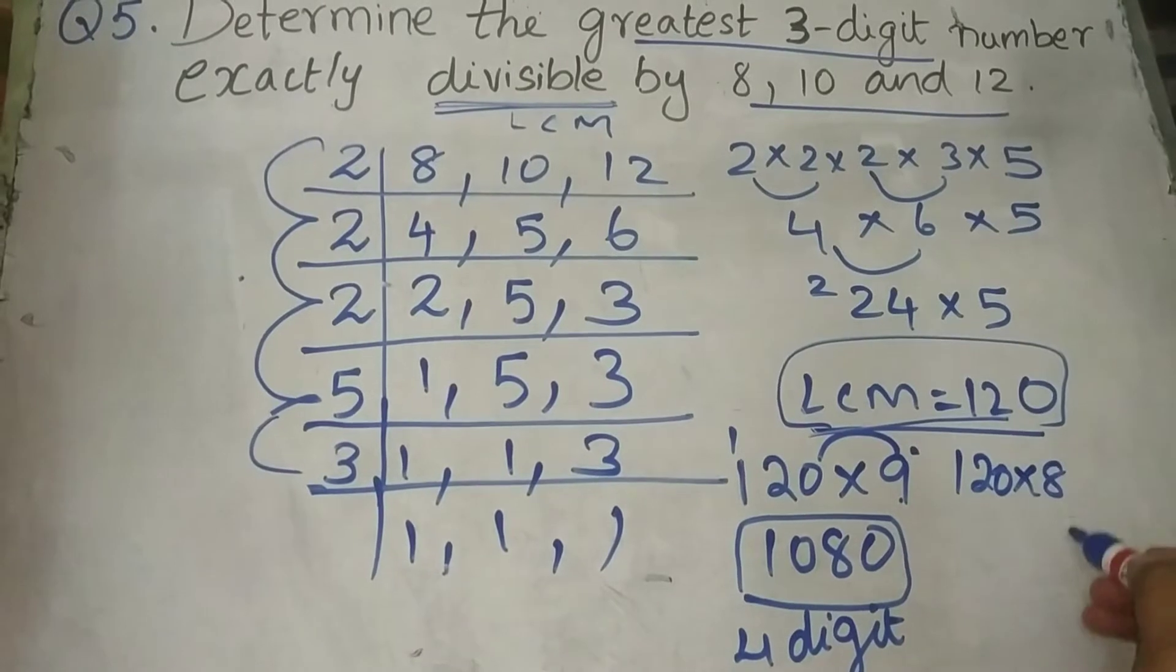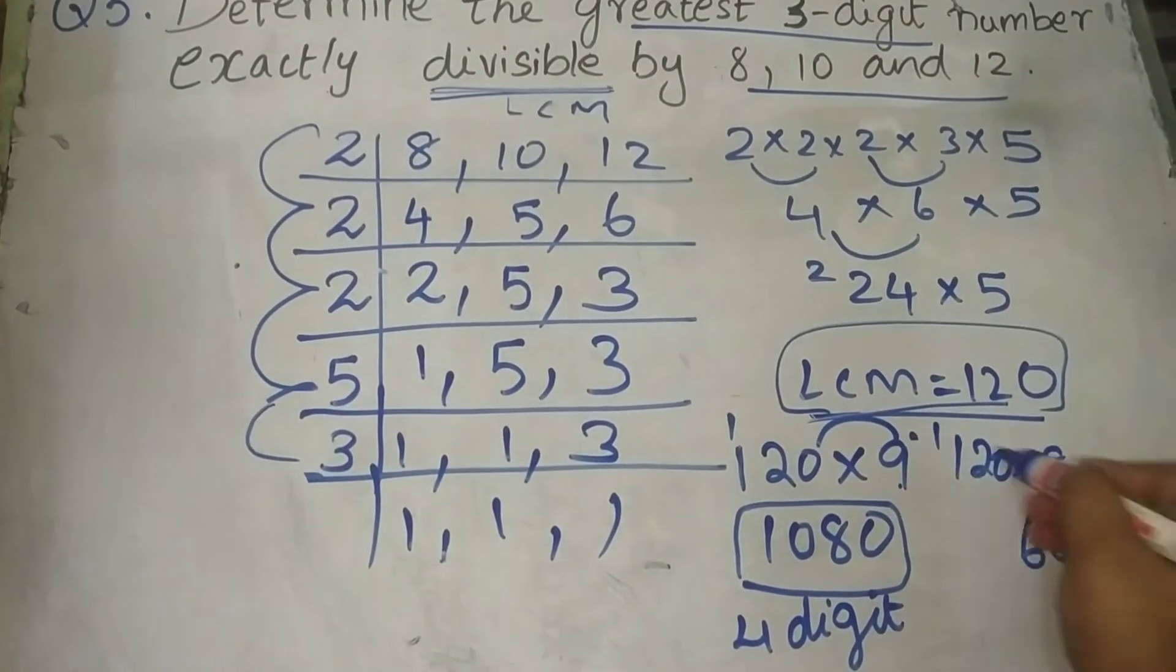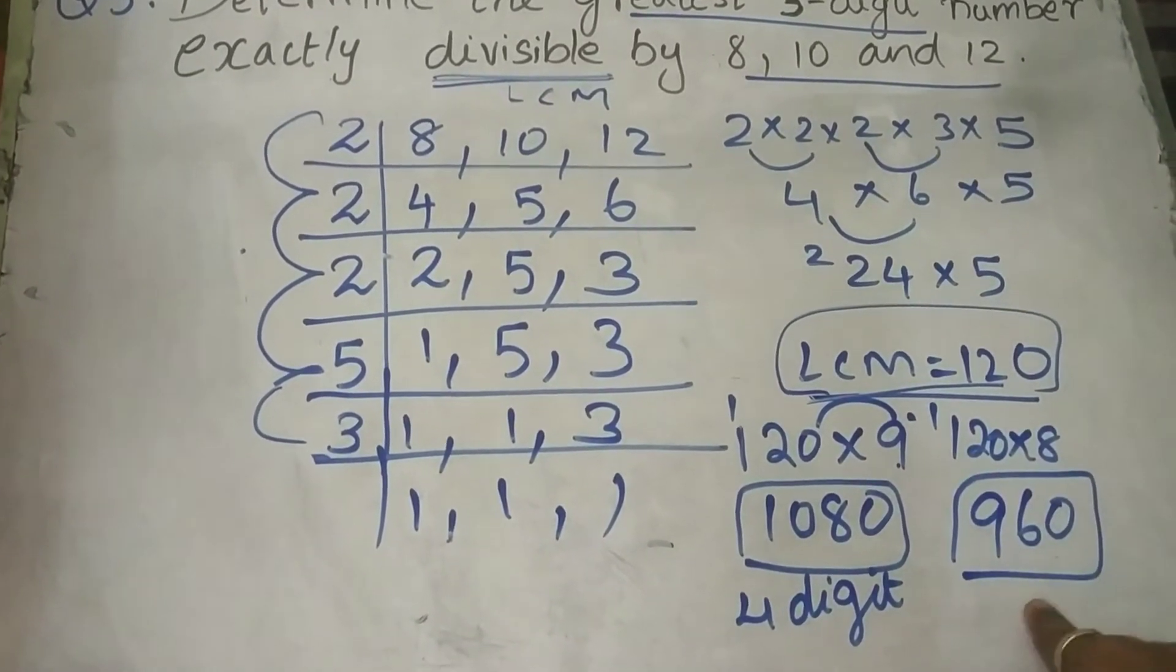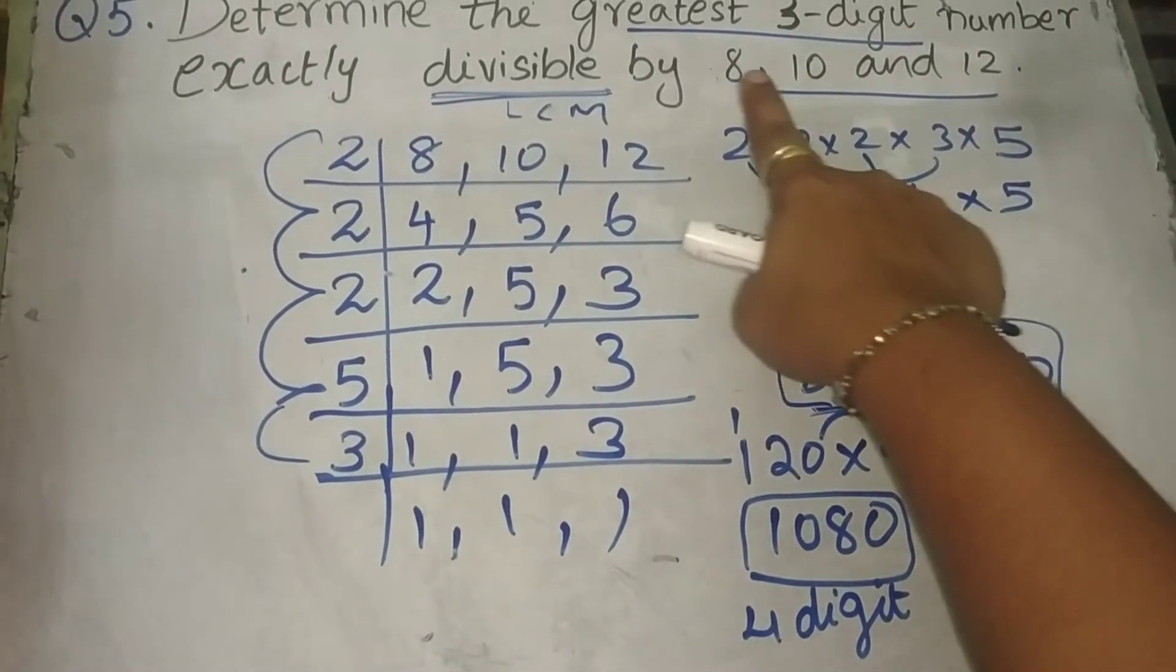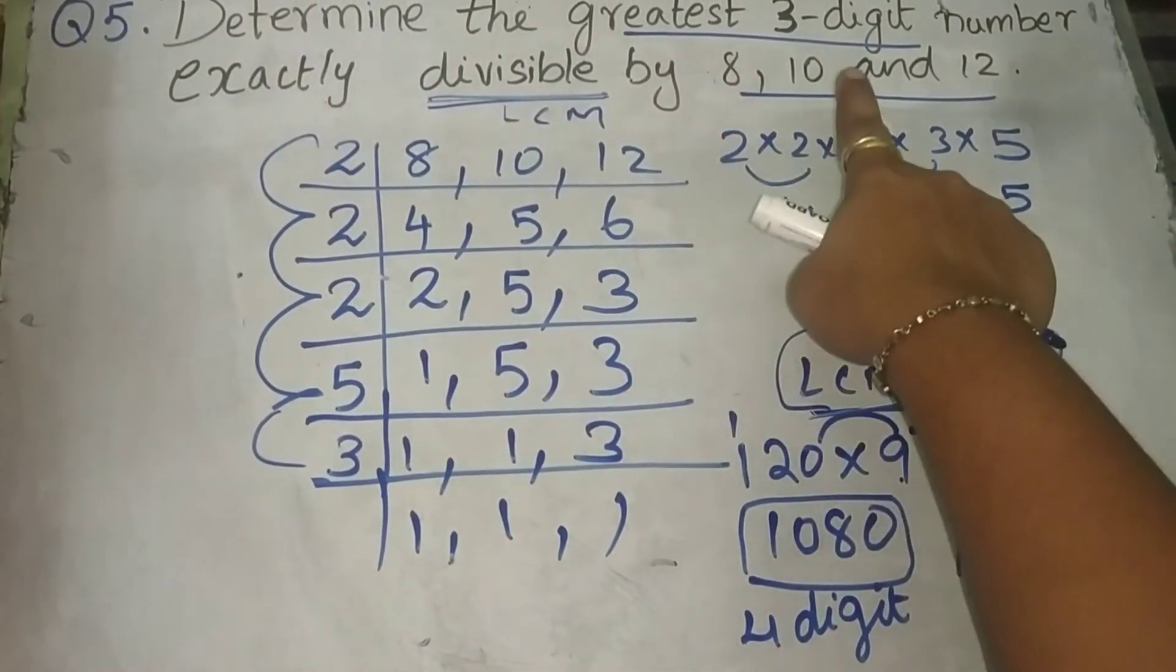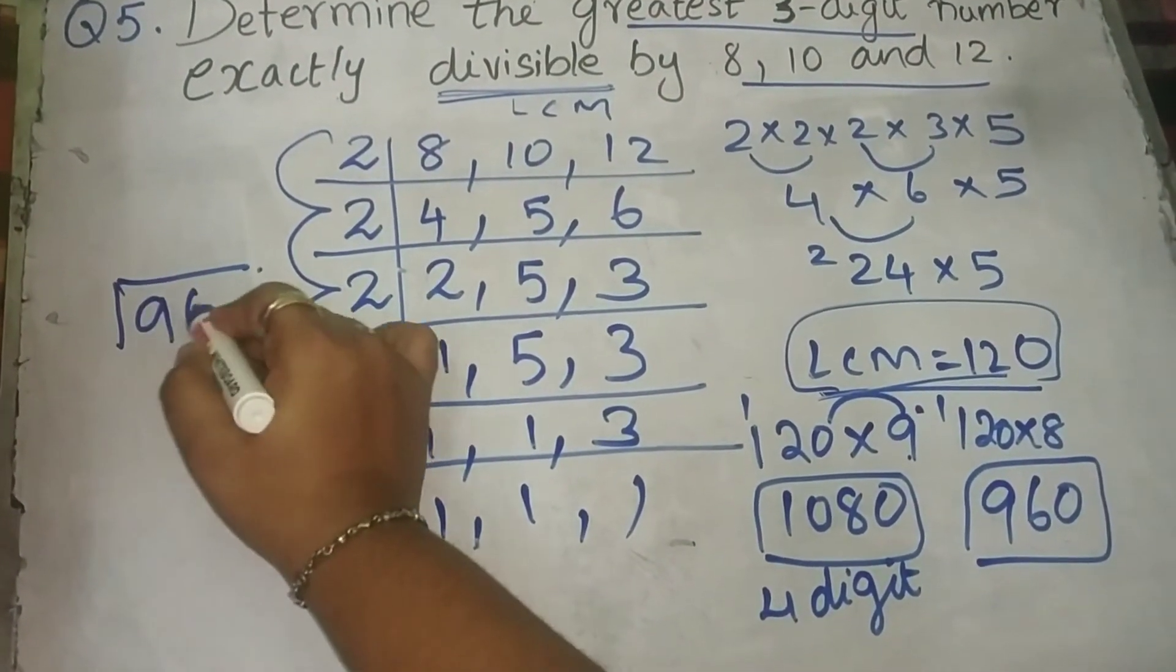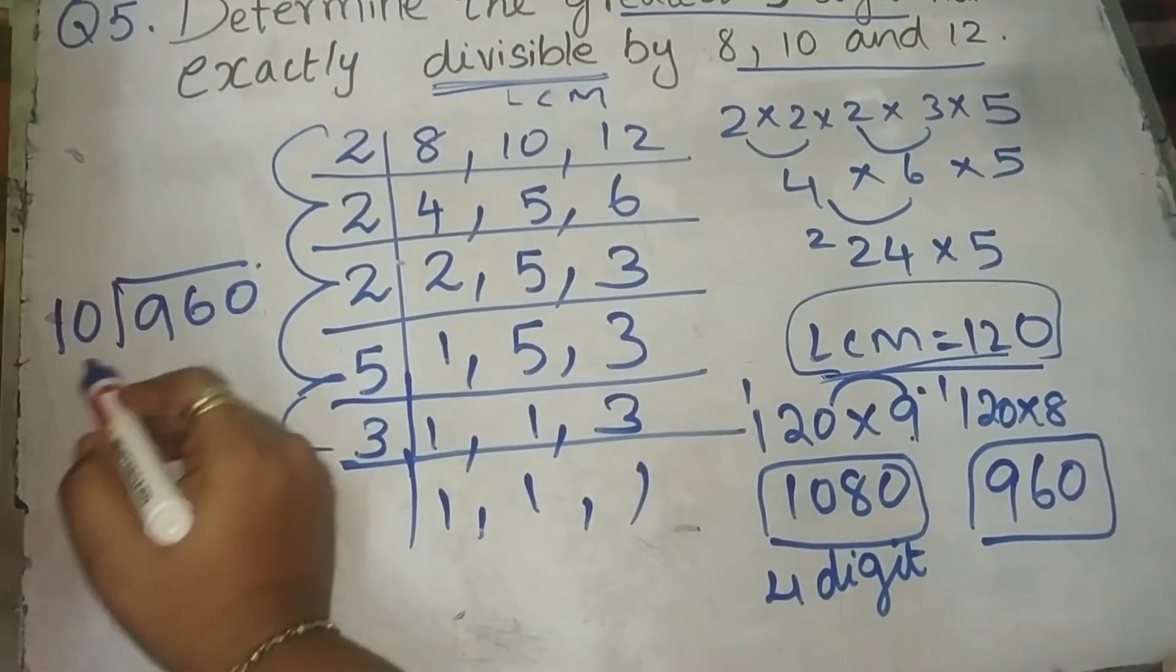120 into 8. So, 8 0's are 0, 8 2's are 16, 1 carry, 8 1's are 8, 9. So, I got the greatest 3 digit number. So, this 960 will exactly divisible by 8, 10 and 12. If you want, you can check it. You can check with any number.